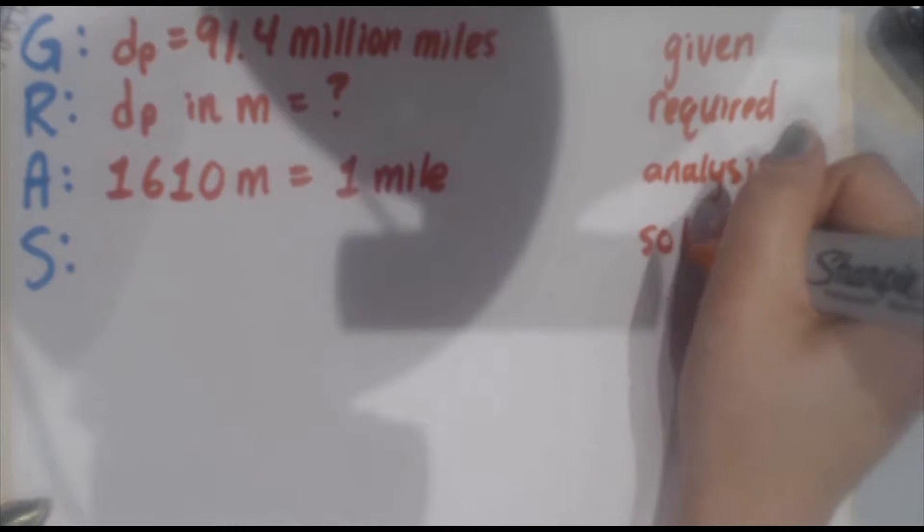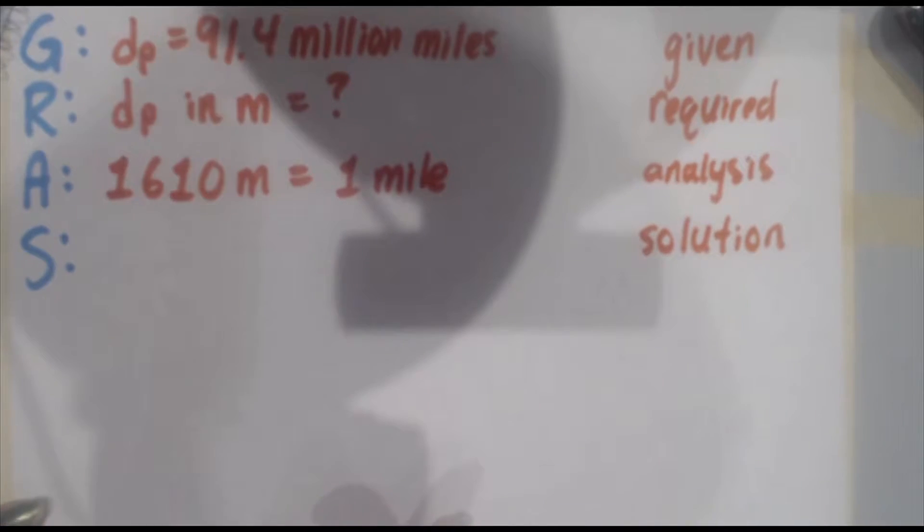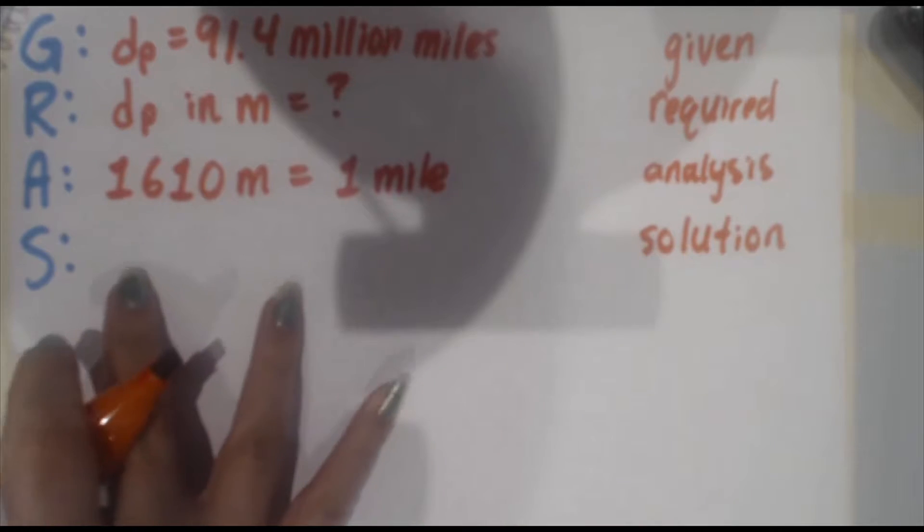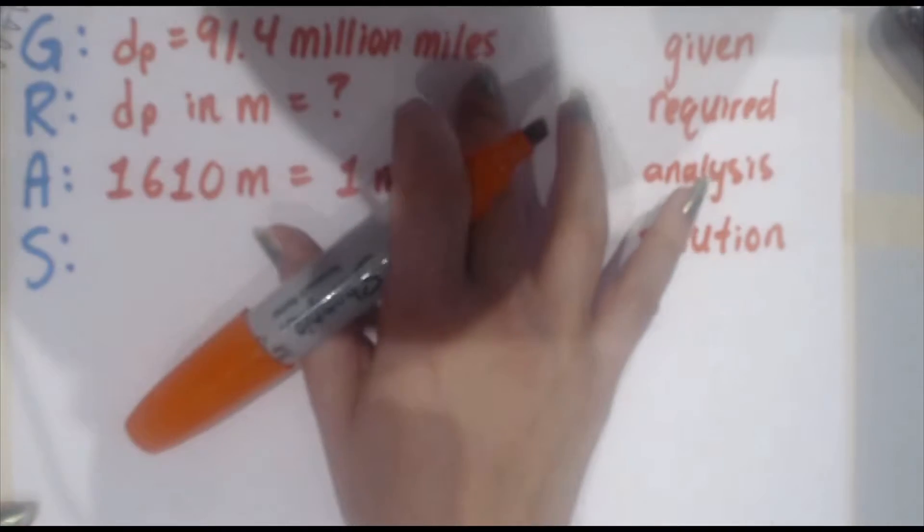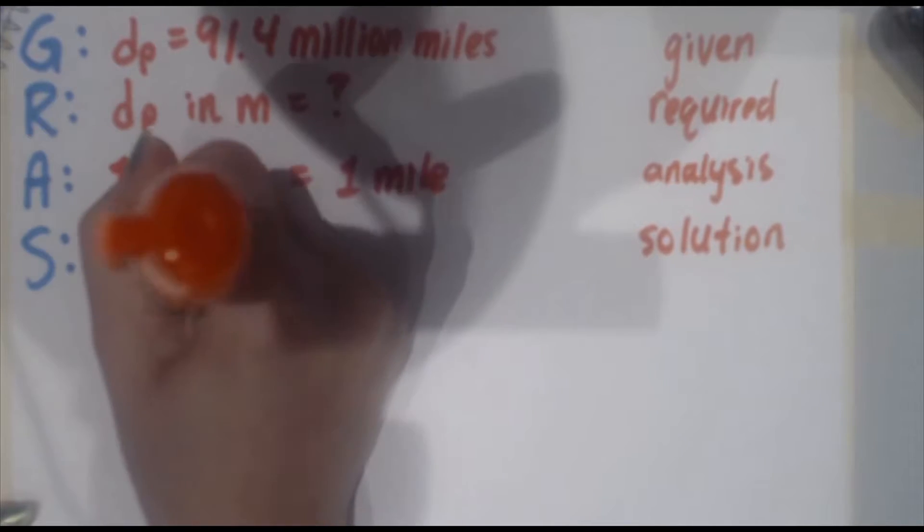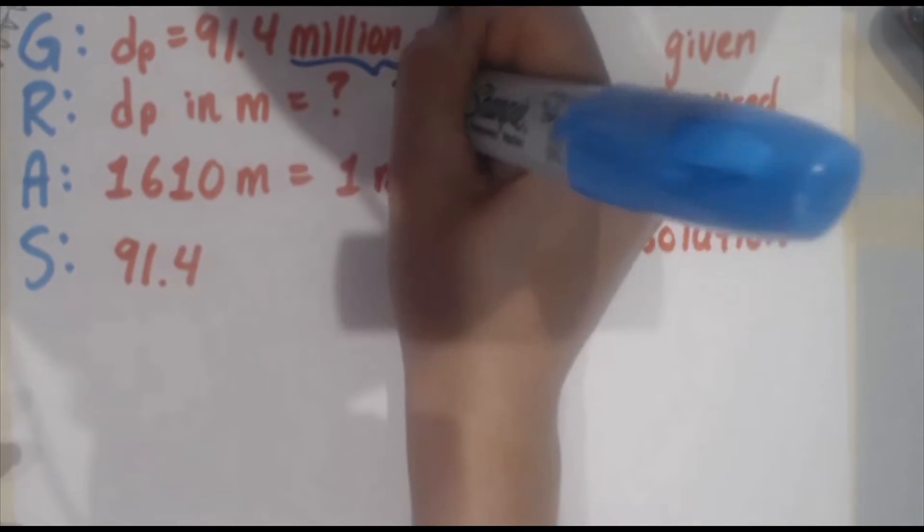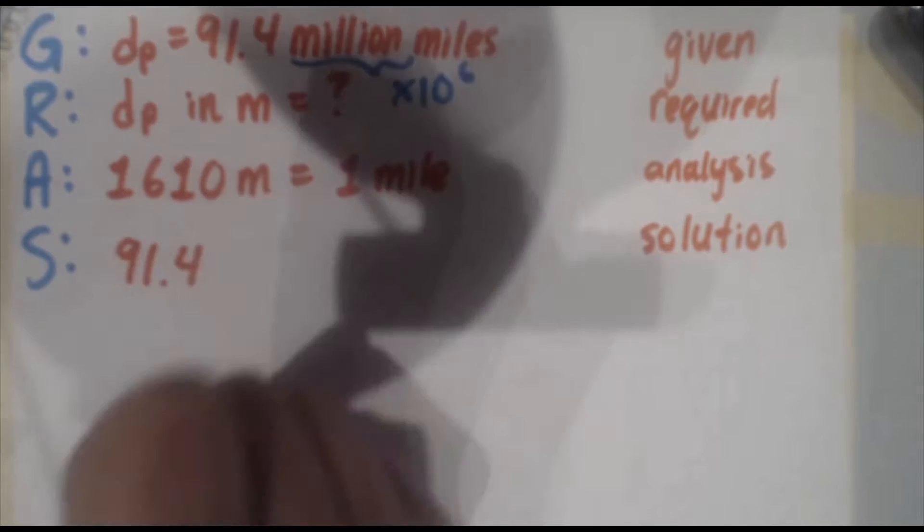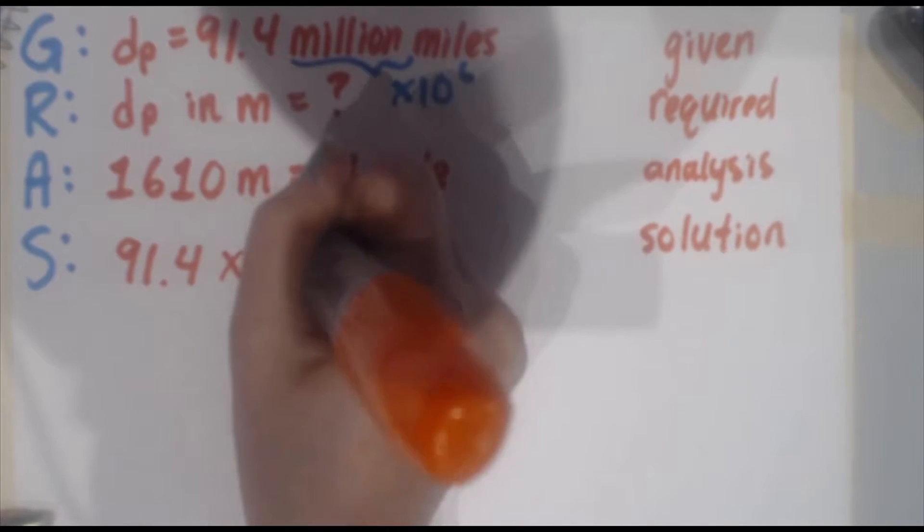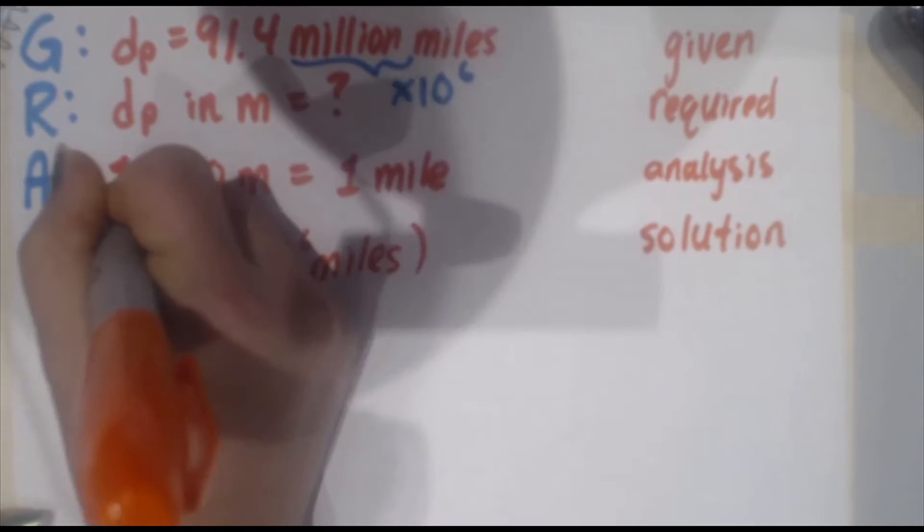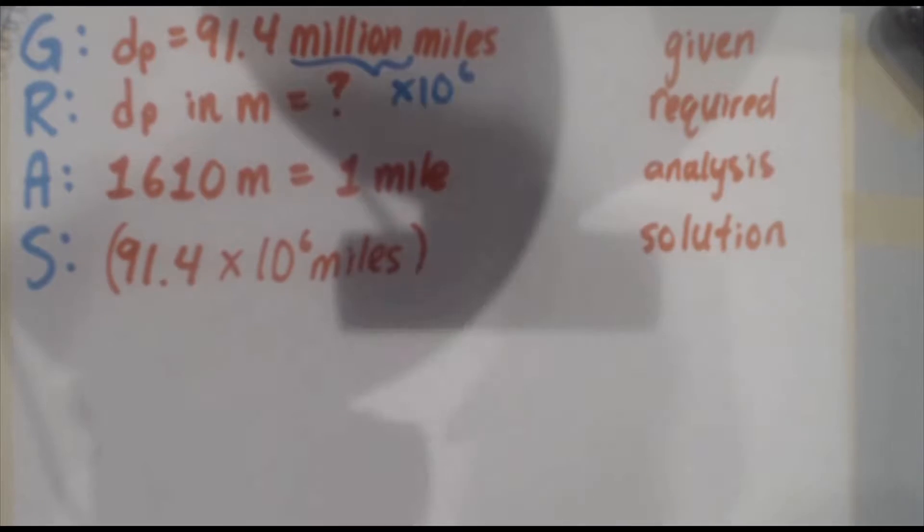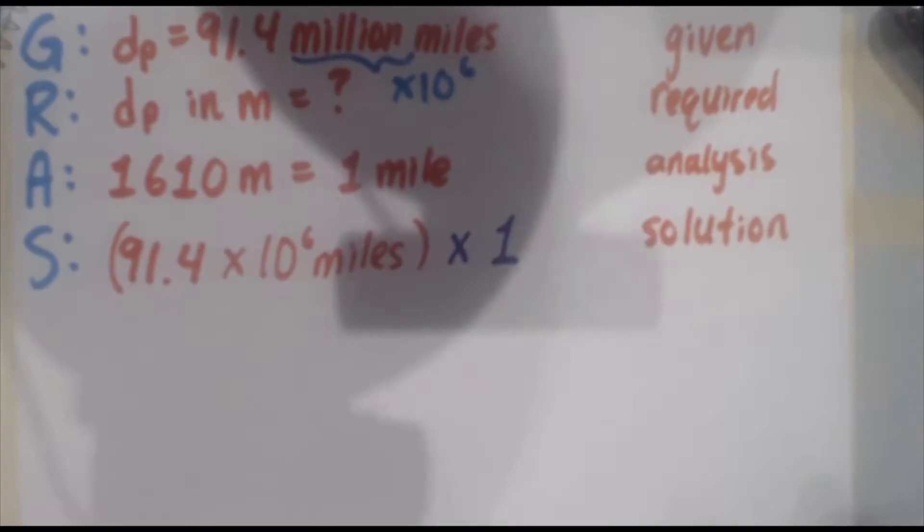Finally S is our solution. The reason I stopped at S is because it's going to be the longest part. So let's go ahead and get started. I'm going to teach you a method on how to convert from one unit to another that will work in every single situation if you use this process. The first thing you do for the S is you write down what you wrote in the G column.